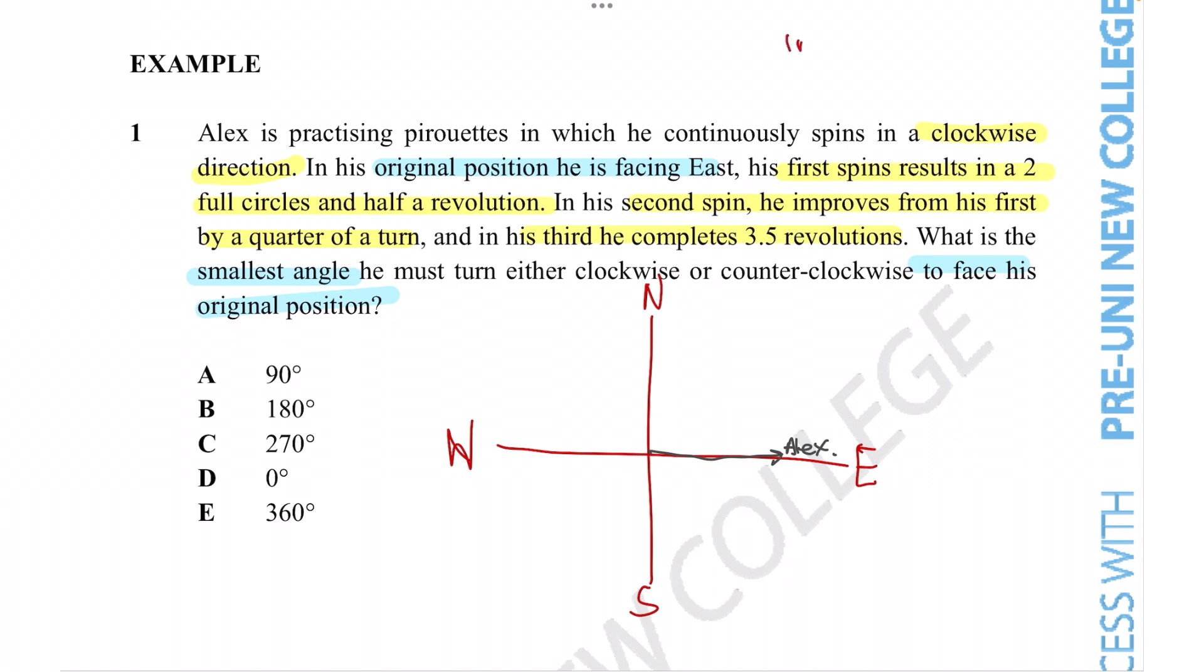Half a revolution—we know that one full revolution is equal to 360 degrees—so half a revolution must equal 180 degrees. Starting off from east, after the two and a half revolutions, he is now facing west. Let's draw out his trajectory like this.